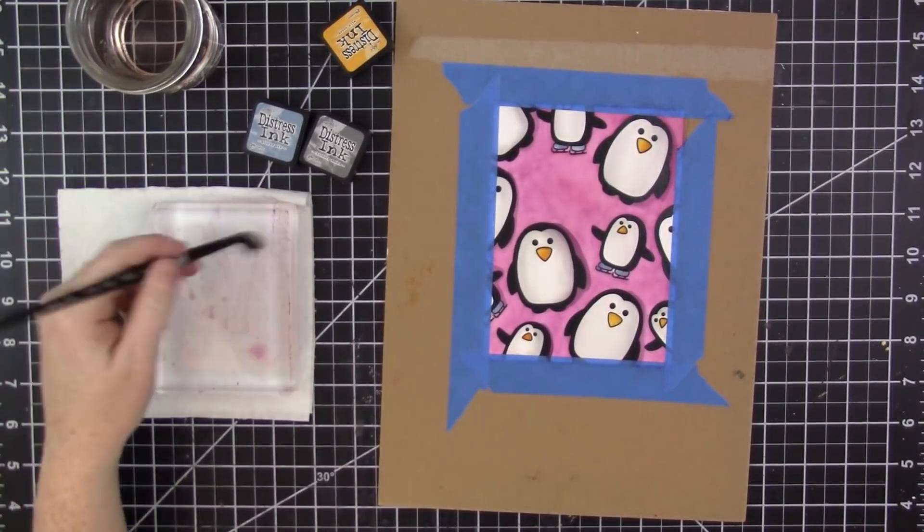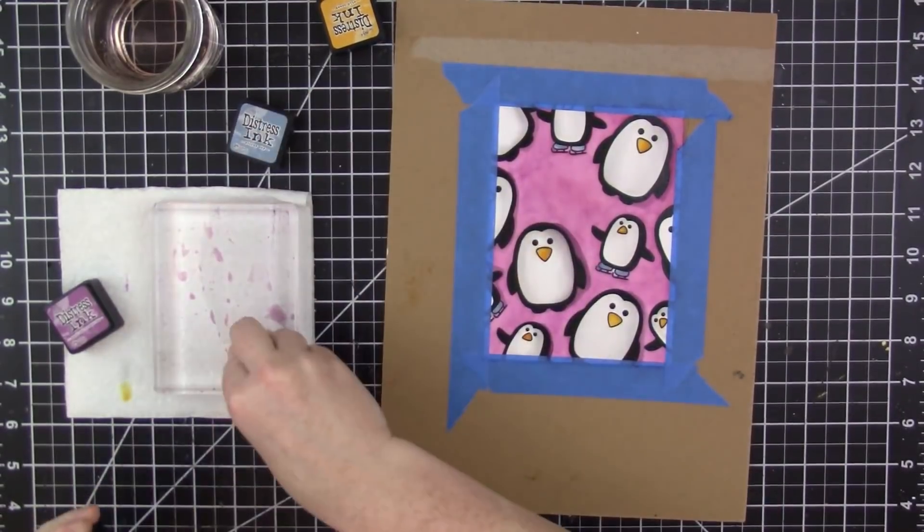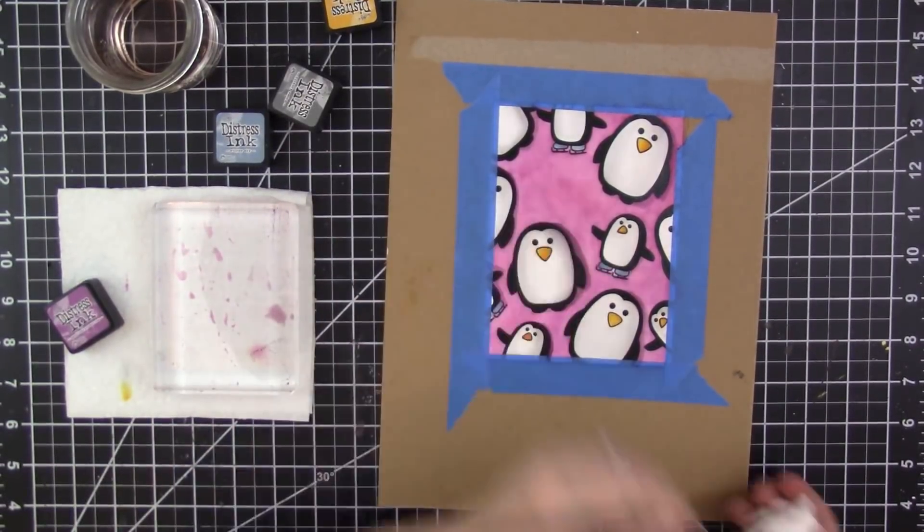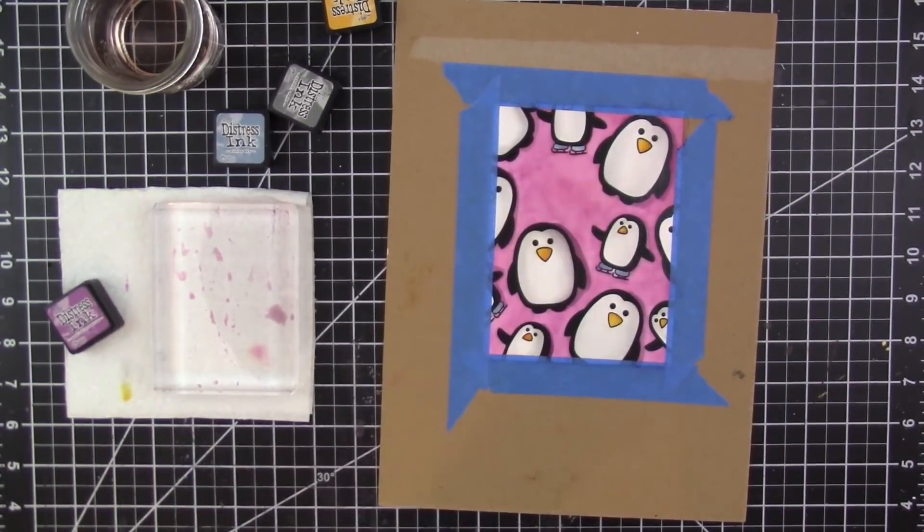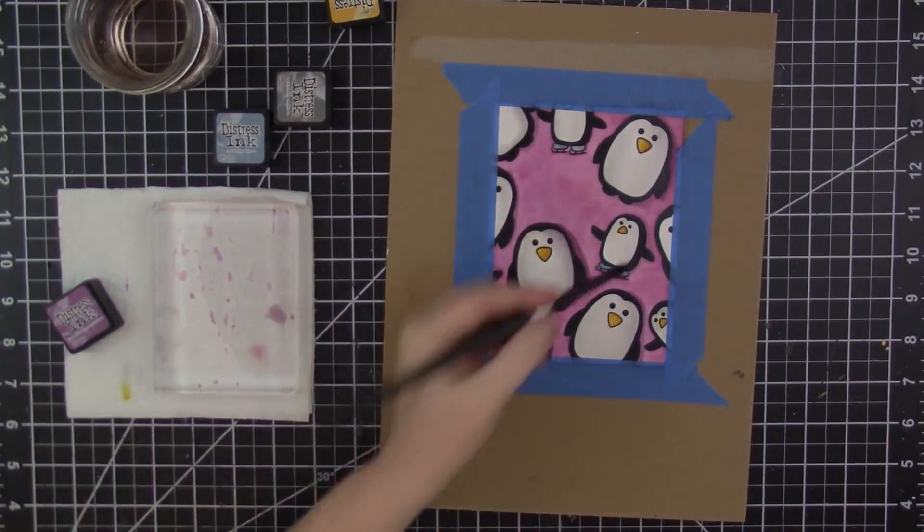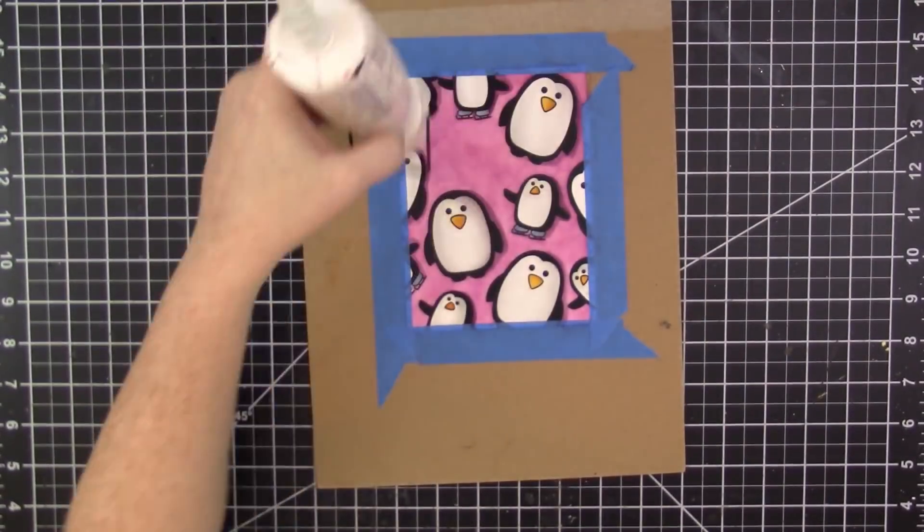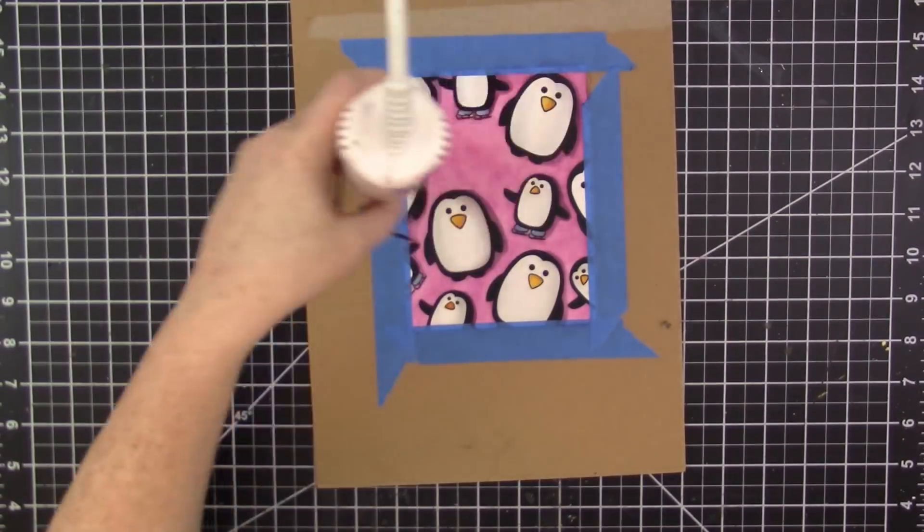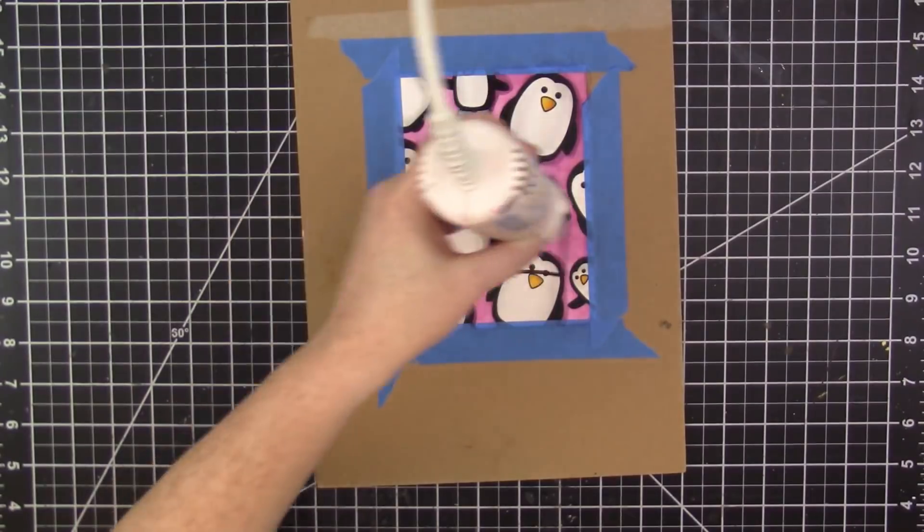And that just makes it look like the penguins have little shadows. Since this card is pretty much a one-layer card, not a lot of dimension to it, then this little touch of giving them the shadow just gives the card the illusion of depth. And then I'm going to dry the card really really well, so I'll hit it with my heat tool till it's completely dry.